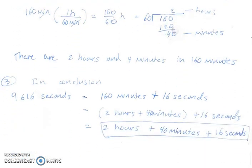In conclusion, 9,616 seconds equals 160 minutes plus 16 seconds, and 160 minutes is 2 hours and 40 minutes. So we have 2 hours, 40 minutes, and 16 seconds in 9,616 seconds.